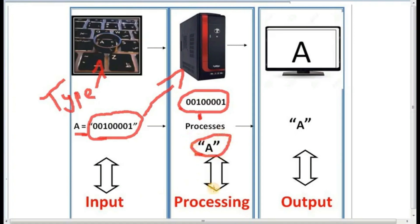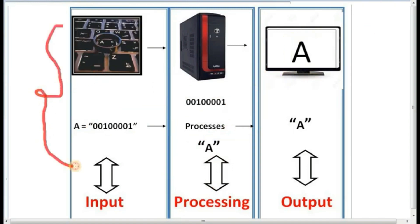After processing, the output will be shown on the monitor screen. Now, this step is known as input. Whatever instruction is given by a user is known as input. When the computer works on our given instruction, it is known as processing. The result which we get after processing is called output.